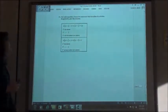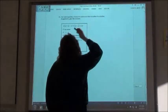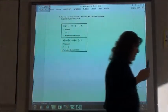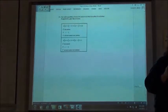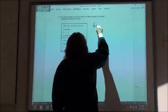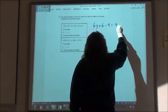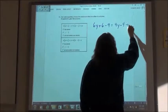So multiplying that out. 6y plus 6 minus 9 equals 4y minus 4 plus 2y. Exactly. Keep going.